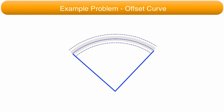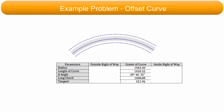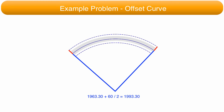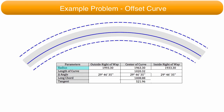Looking at the diagram, two parameters for the inside and outside of the right-of-way are needed. The delta angle used for the center of the curve is the same for the right-of-way boundaries, and its value is placed in both columns. Also from the diagram, the radius for the outside right-of-way boundary is found by adding one-half the right-of-way width to the center curve radius. Conversely, the inside right-of-way radius is found by subtracting one-half the right-of-way width from the center radius. These two parameters — radius and delta angle — define the right-of-way boundaries.